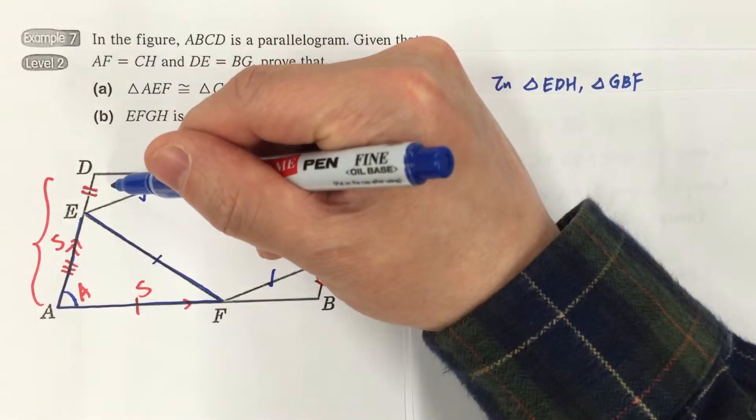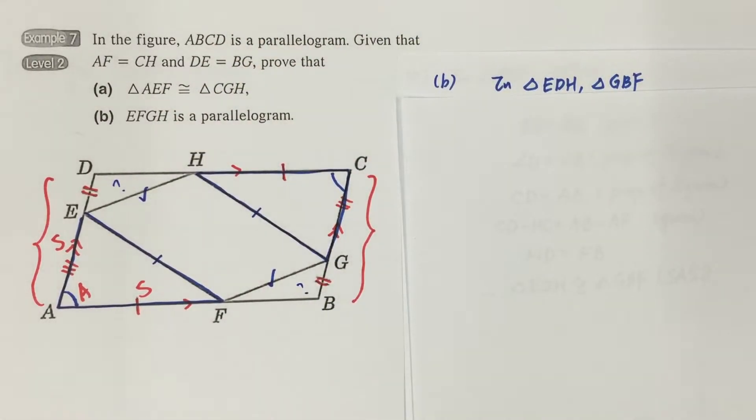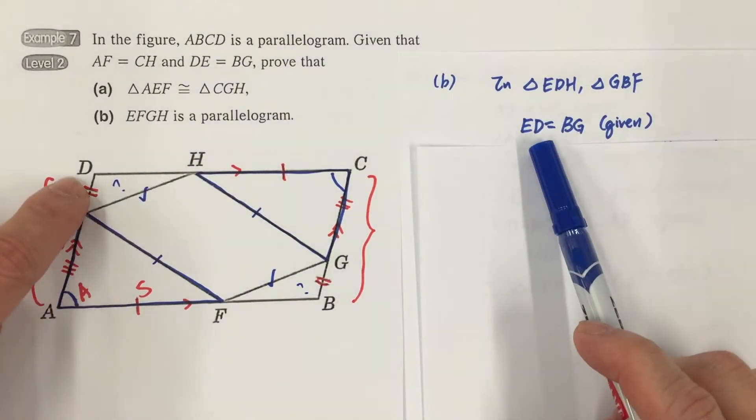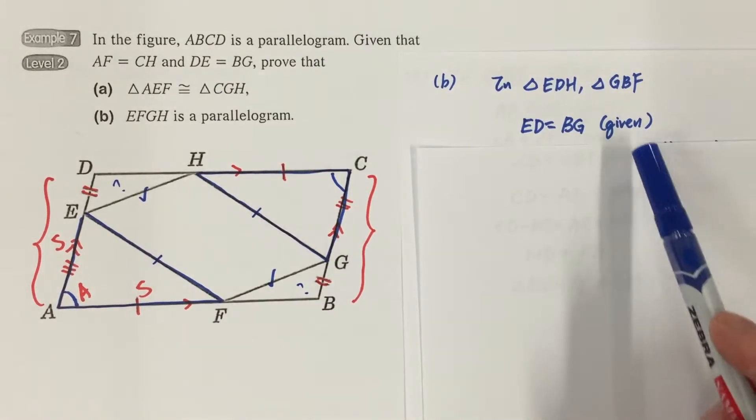But again, we need to prove that these two triangles are congruent. So in order to save time, I've listed down the step: ED equals BG, they are given equal to each other.